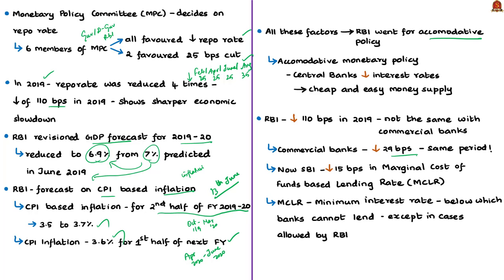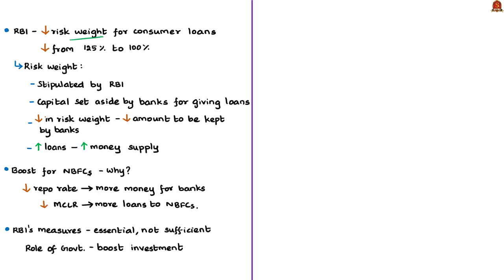Following the latest RBI cuts, the State Bank of India responded promptly with a 15 basis points cut in the Marginal Cost of Funds-Based Lending Rate (MCLR), and other commercial banks are expected to follow. MCLR is an internal reference rate for any commercial bank — it refers to the minimum interest rate below which a bank cannot lend, except in cases allowed by the RBI. Additionally, the RBI reduced the risk weight for consumer loans from 125% to 100% (excluding credit cards) to infuse more money into the economy. Risk weight is the capital required to be set aside by banks for giving loans, expressed as a percentage of the loan disbursed.